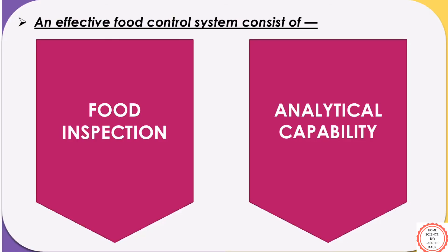An effective food control system consists of food inspection and analytical capability. In food inspection, we talk about verifying whether the food product meets the necessary standard or not. The processing of food must go through according to the regulations and legislation. Food inspectors are appointed by the government to check the quality and standards in the labs. In analytical capabilities, we talk about certified laboratories that are well-equipped with latest technology, well-trained and knowledgeable staff, and great analytical capabilities for detecting food contaminations.